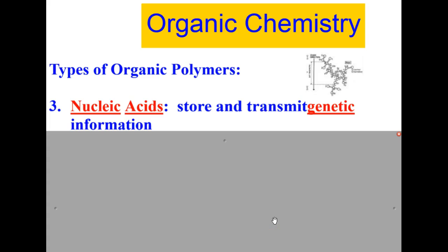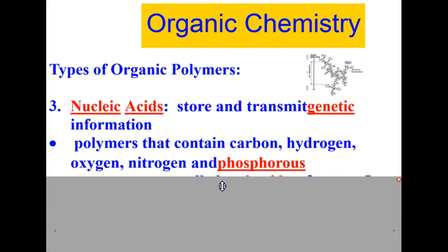A third type of organic polymer are nucleic acids. The function of nucleic acids in living things is to store and transmit genetic information. Nucleic acids are polymers that contain hydrogen, carbon, oxygen, nitrogen, and phosphorus.